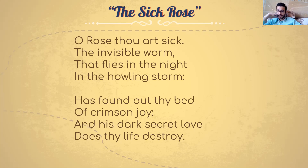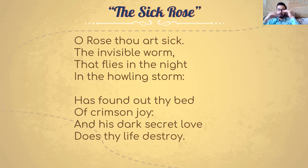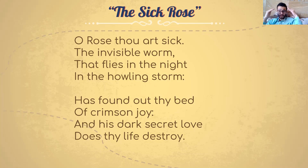'O Rose, thou art sick!' — 'thou art' means 'you are.' 'The invisible worm that flies in the night, in the howling storm, has found out thy bed of crimson joy, and his dark secret love does thy life destroy.' Can you see the rhyme scheme? 'Sick, worm, night, storm' — ABCB — and then 'bed, joy, love, destroy' — ABAB. Again the form is new, there's no strict rule.